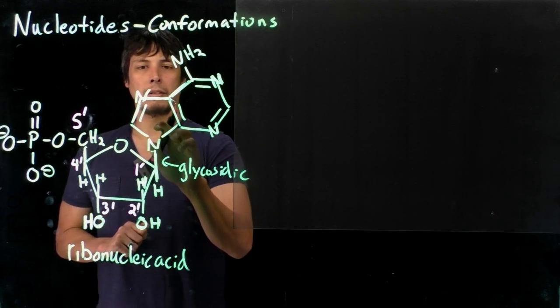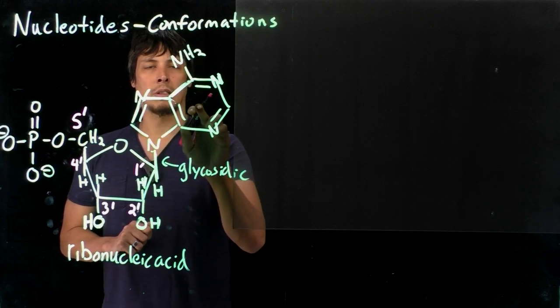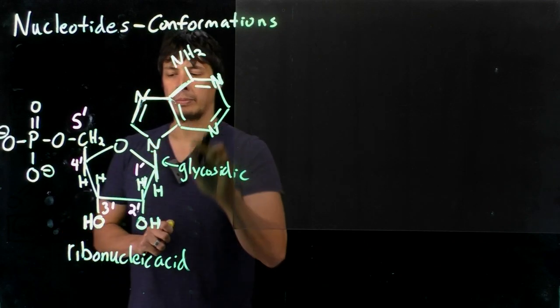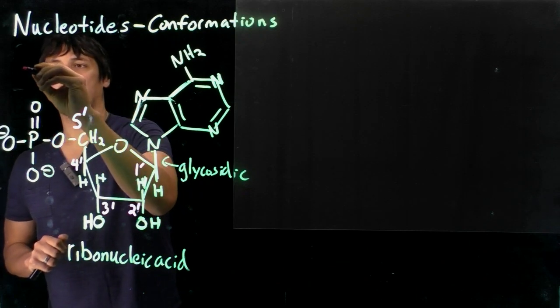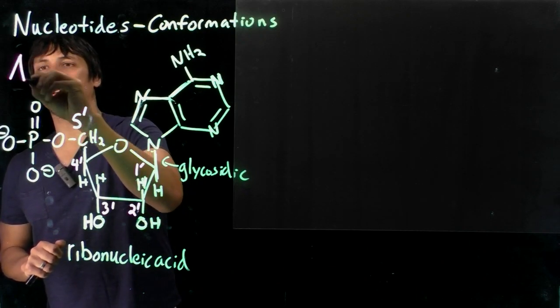And so we can see from the structure of this, this nitrogenous base is adenine, and so the name for this ribonucleic acid is adenosine.